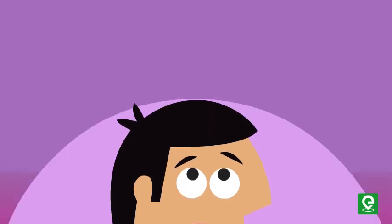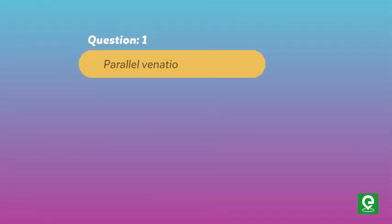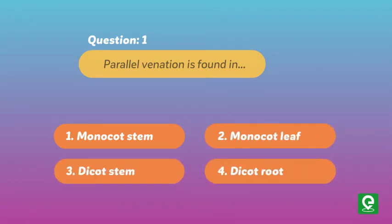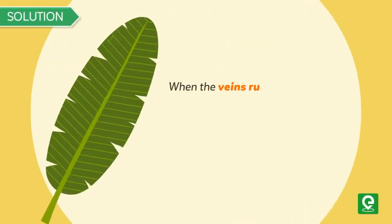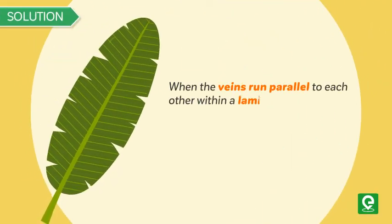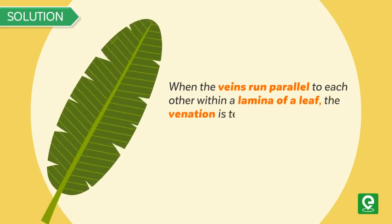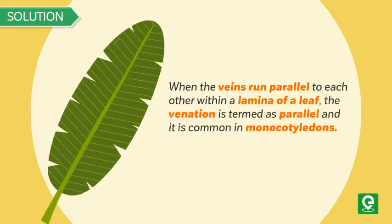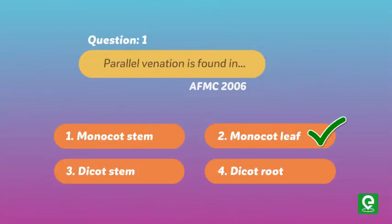Question one: Parallel venation is found in — (1) monocot stem, (2) monocot leaf, (3) dicot stem, (4) dicot root. This question was asked in AFMC 2006. Solution: When the veins run parallel to each other within the lamina of a leaf, the venation is termed parallel, and is common in monocotyledons. Hence option two is correct.